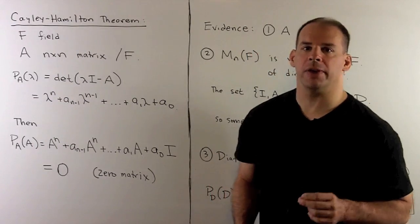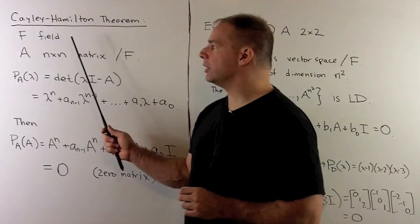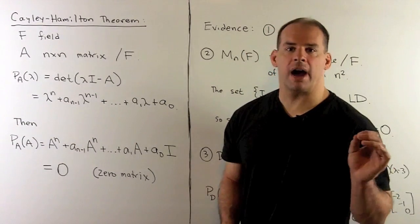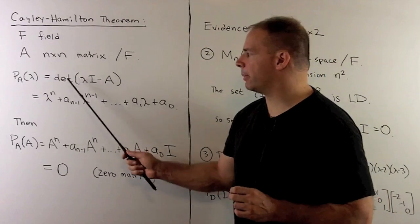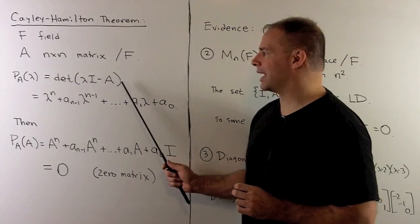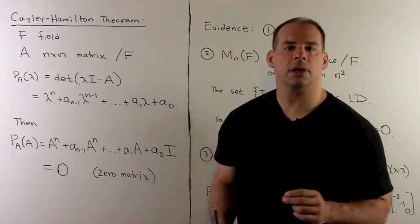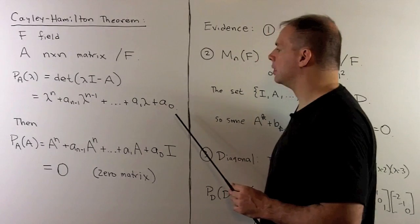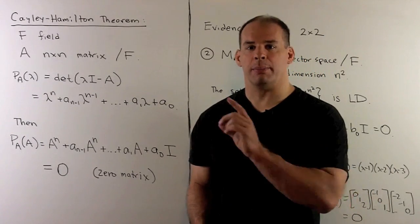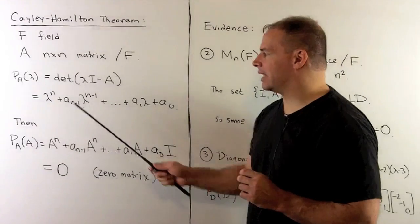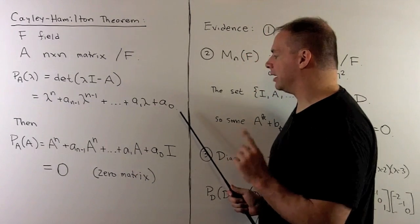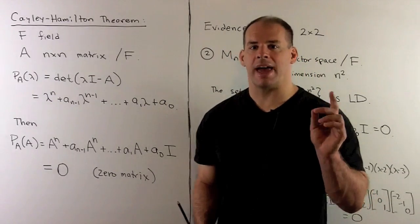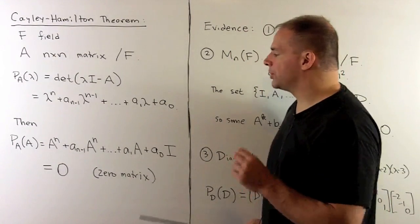The statement of the theorem: F is a field, A is an n-by-n matrix with entries in F. We form the characteristic polynomial of A — the determinant of lambda times the identity matrix minus A. That's a monic polynomial of degree n with entries in our field. If we consider this as a matrix polynomial, replacing lambda with A and multiplying the constant term by the identity matrix, the Cayley-Hamilton theorem states that this matrix polynomial is equal to the zero matrix.